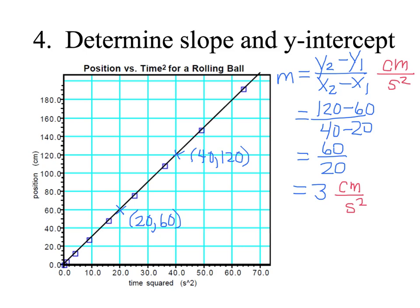We also want to determine the Y intercept. And the Y intercept is going to be the point where the line of best fit hits the Y axis. And you can really just extend your line to the Y axis and make an estimate of where it is. For this graph, the Y intercept appears to be 0, and it will always have the same units. It's a Y value, so it will have the units of the Y axis, in this case centimeters.